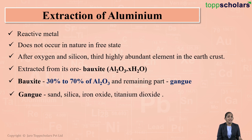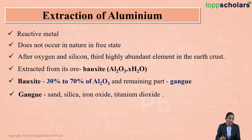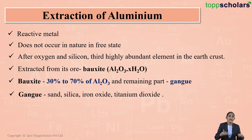The gangue impurities in bauxite can include sand, silica, iron oxide, and titanium dioxide. Aluminium can be extracted from its ore bauxite, which contains 30 to 70 percent aluminium oxide, with the remaining portion consisting of these gangue impurities.